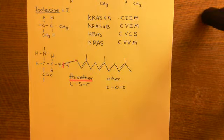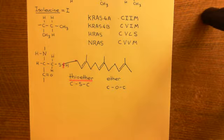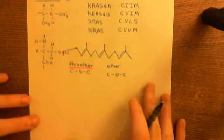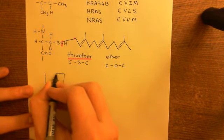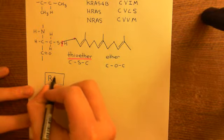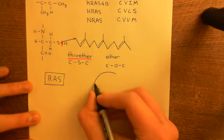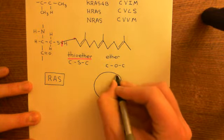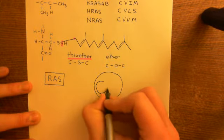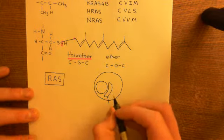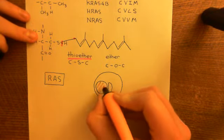So this is how you farnesylate RAS proteins. All of the RAS proteins are going to get farnesyl groups added on to the cysteine of the CAAX box that is four-in from the terminal amino acid. Once they have got these farnesyl groups added on, the synthesis of RAS occurs on cytoplasmic ribosomes, so at the moment the RAS protein is within the cytoplasm. Let me draw a picture of the cell here with the various compartments that are going to be important for our discussion.